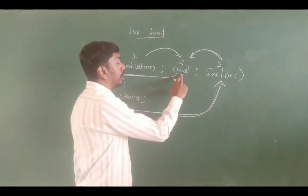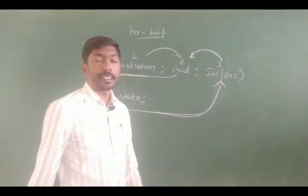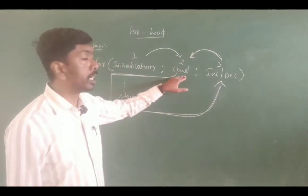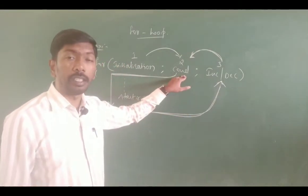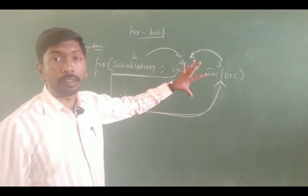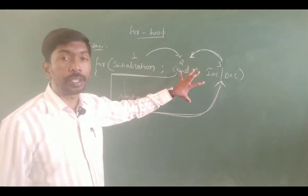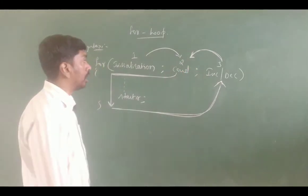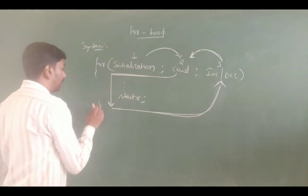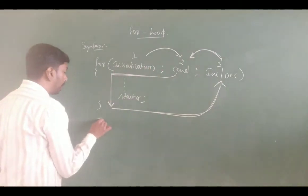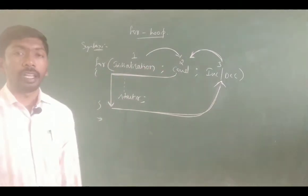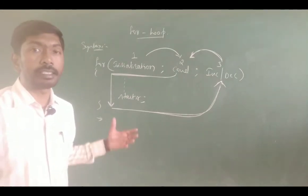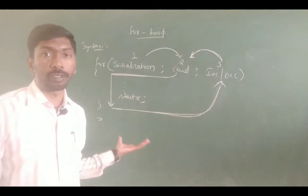The condition and increment or decrement will execute alternatively until the condition becomes false. If the condition is false the block is skipped, looping stops, and the next statement after the loop will execute. This is the for loop.